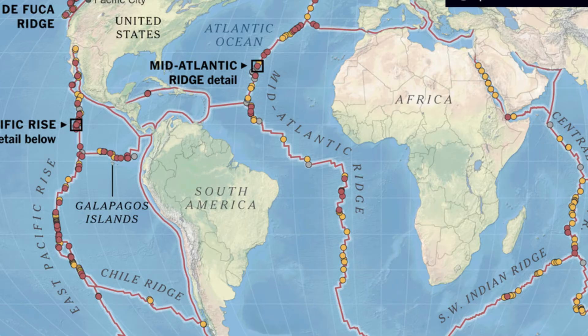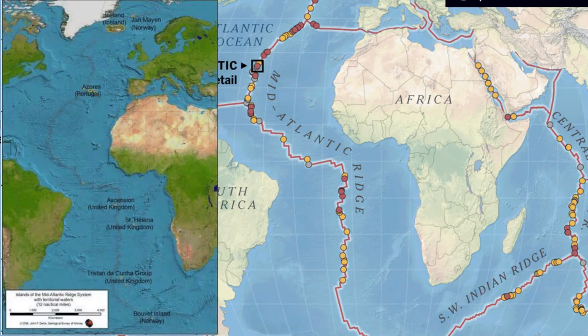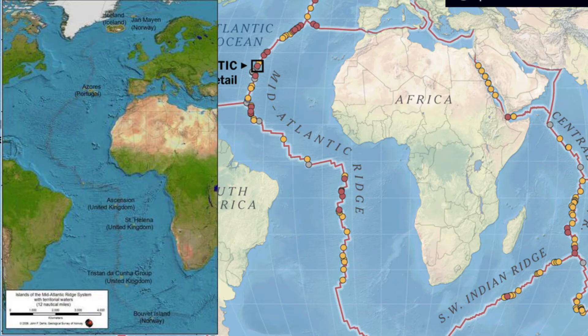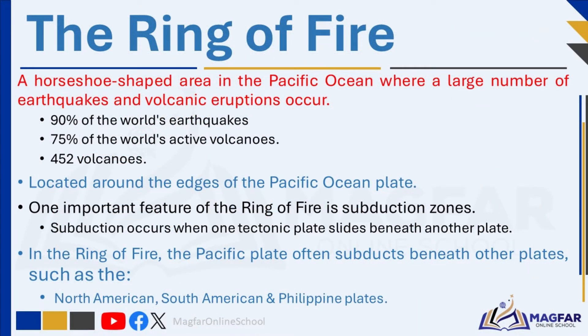This geological feature represents one of the prime examples of seafloor spreading, where new oceanic crust is formed as magma wells up from the earth's mantle along the divergent boundary. As the plates move apart at the Mid-Atlantic Ridge, magma ascends to fill the void, solidifying upon contact with the cold seawater. This continuous process results in the creation of new oceanic crust accompanied by volcanic activity along the ridge.